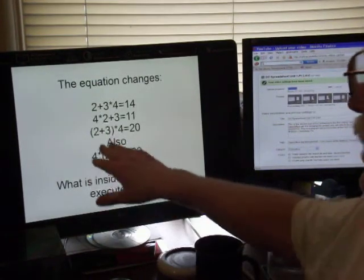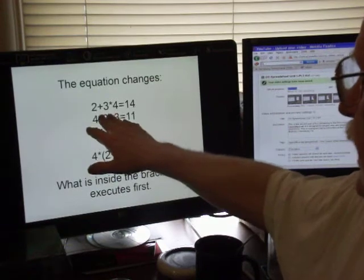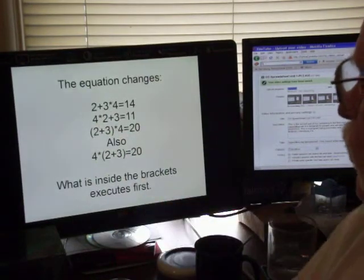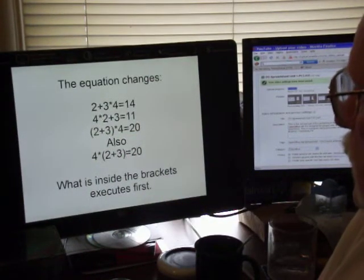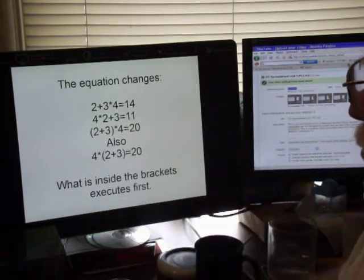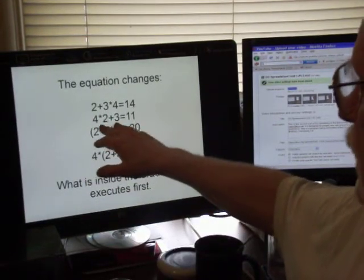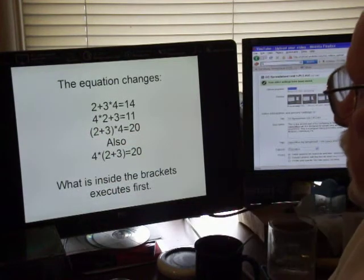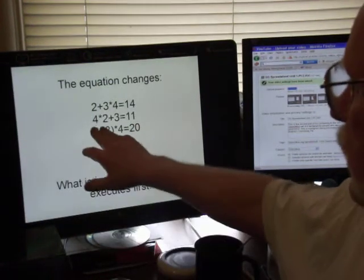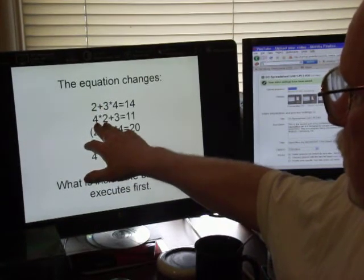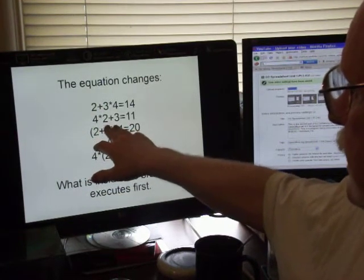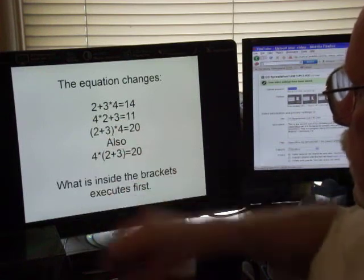The equation changes. 2+3×4 equals what? Fourteen. 4×2+3—see, we change the order. Now we have four times two is eight, plus three would be eleven.